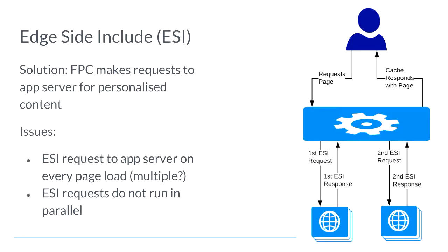So how do we get around this? Varnish would be a very limited full page cache if it didn't have a built-in mechanism for dealing with this. What Varnish gives us — and Nginx as well if you're using that as a proxy — is a thing called an Edge Side Include. An ESI is essentially special markup we insert into our page where Varnish, upon seeing the cached page, will make a request back to our back-end app server to get the content to insert at that position.